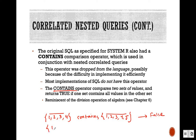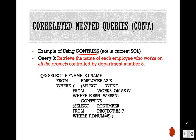{1,2,3,4,5} CONTAINS {1,2,3} returns true because the first set contains every value from the second set. Now let's see one example: retrieve the name of each employee who works on all the projects controlled by department number five. We need the project table which has pnumber and dnumber.